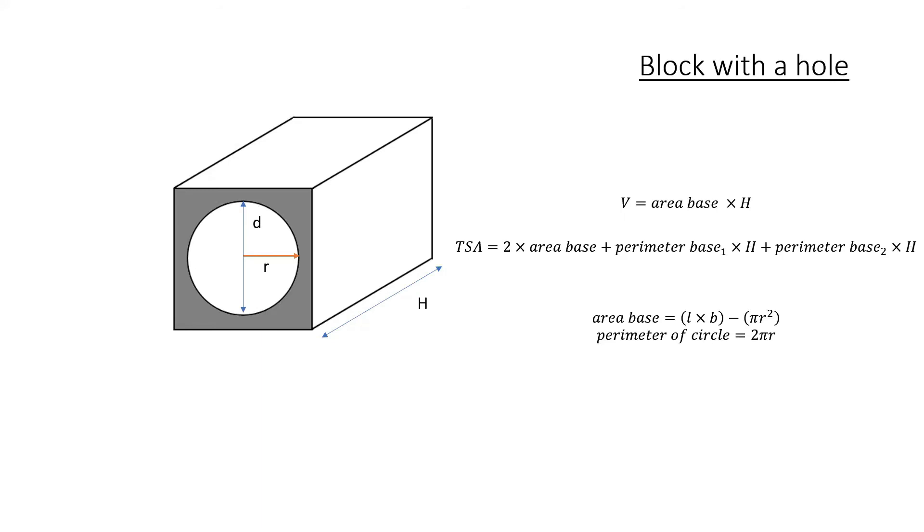Alright, so, that's my area of my base. Remember, the perimeter of your circle will be 2 pi r. With that taken into account, we're going to take a look at my modified total surface area formula.